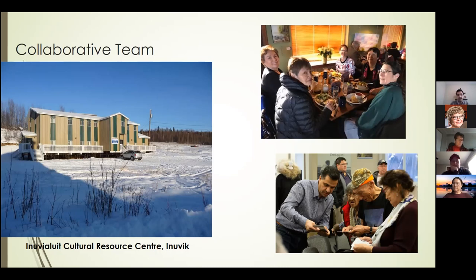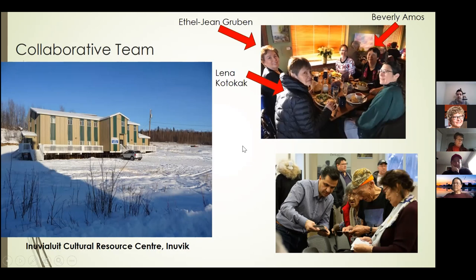The project focuses on cultural heritage preservation and access for Inuit communities in the north — from Alaska on the US side extending toward Western Canada and the Eastern Arctic. This is a collaborative project, working with community members, community leaders, and the Inuvialuit Cultural Resource Center. The picture on the left shows it is located in Inuvik. Our three community partners are Ethel Jean Gruben, Lena Coetic, and Beverly Amos.